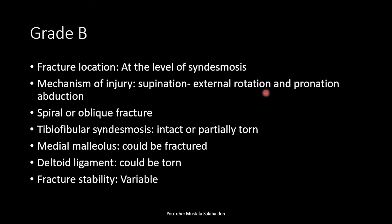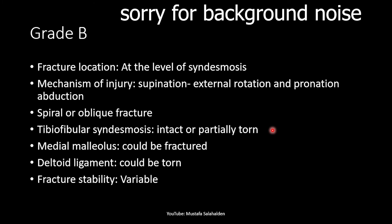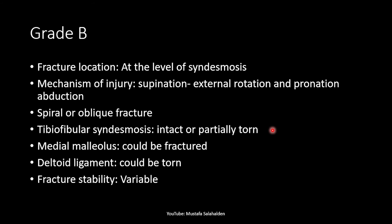For Grade B, the fibular fracture is at the level of the syndesmosis. The mechanism of injury is supination-external rotation or pronation-abduction. The fracture is spiral or oblique. The tibiofibular syndesmosis is intact or partially torn, but the space between the tibia and fibula is not widened. The medial malleolus could be fractured and the deltoid ligament could be torn. The fracture stability is variable.